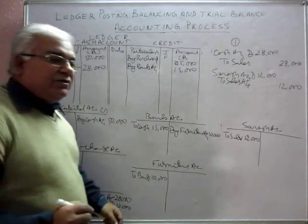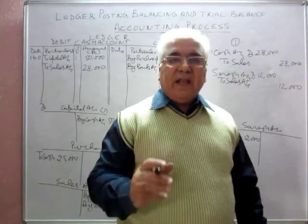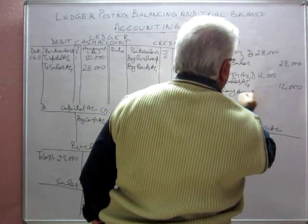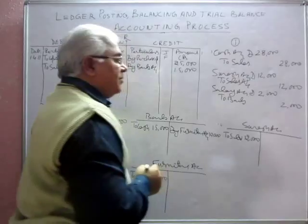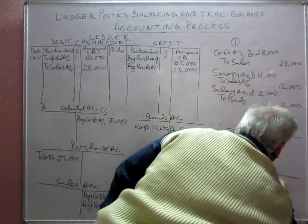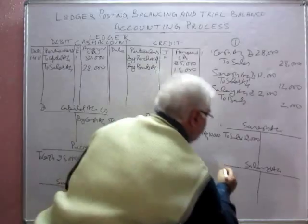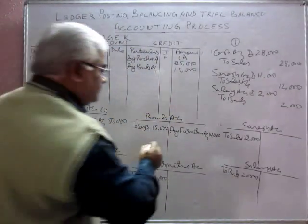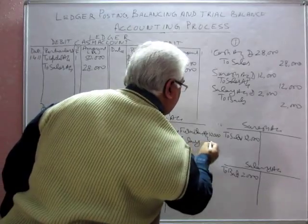If we pay salaries through cheque, our entry will be: salary account debited to bank, 2,000. We open a salary account, which is debited to bank, 2,000. Bank account will be credited by 2,000, so in the bank account we write 'By Salary, 2,000'.